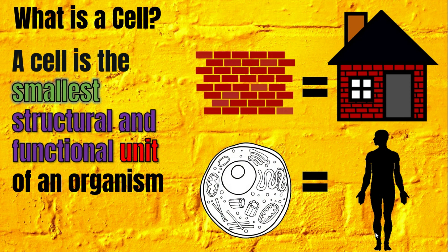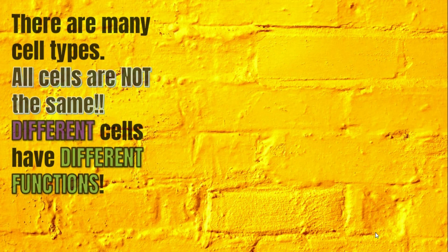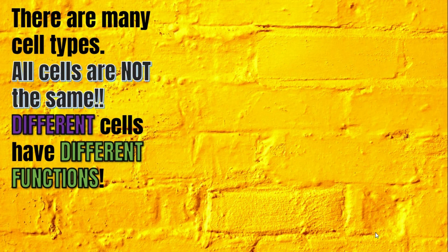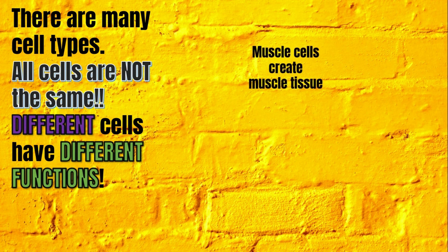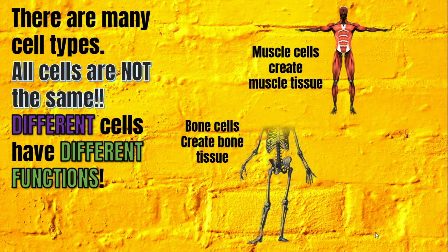There are many cell types — all cells are not the same. Different cells have different functions. Muscle cells create muscle tissue. Bone cells create bone tissue. Brain cells create brain tissue.